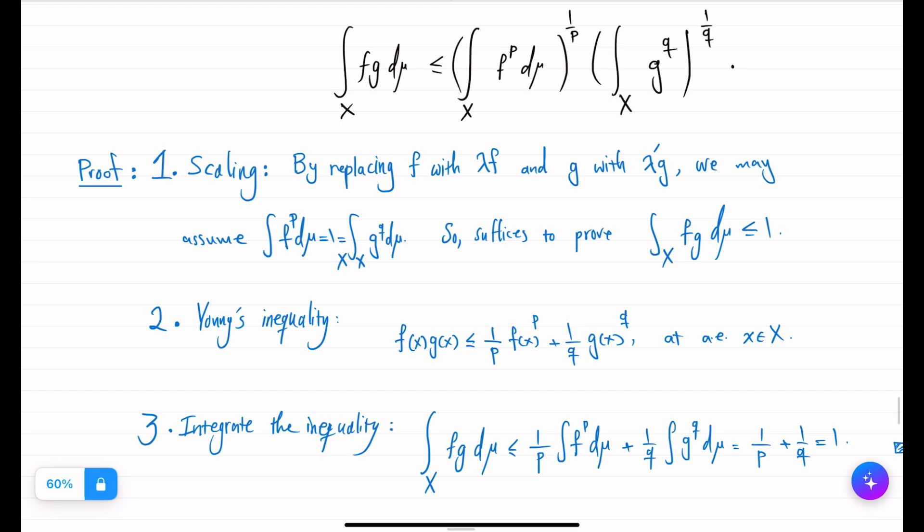First, one starts by observing that you can scale both sides. They scale the same way if you multiply f or g or both with numbers, and therefore you can assume that their norms is equal to 1. And therefore all that remains to be shown is that integral fg is less than or equal to 1.